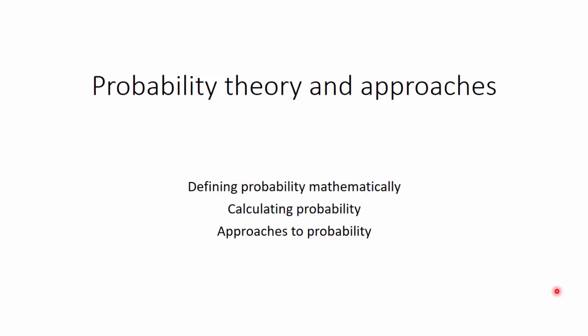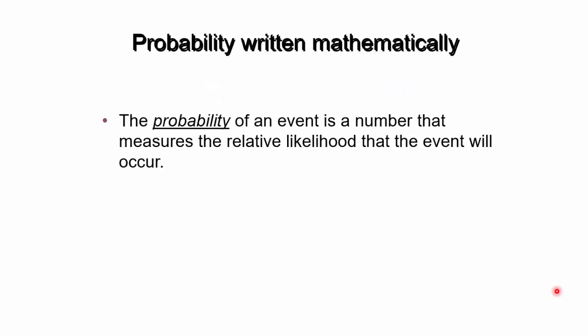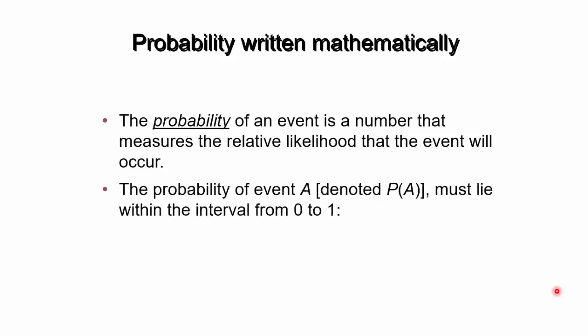So how do we define probability? We had already defined probability of an event as the number or the measure of the relative likelihood that event would happen given a few opportunities of happening. The probability of event A is denoted by P(A), where A is the event, and it must lie within the interval 0 to 1.